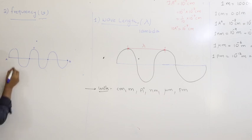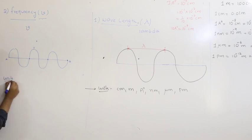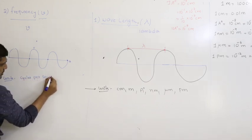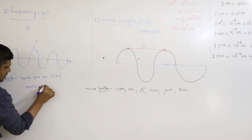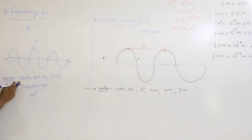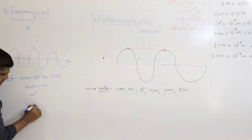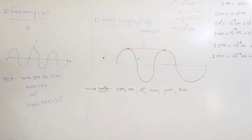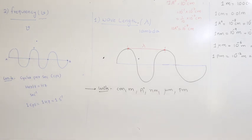The units of frequency are cycles per second (CPS), or Hertz (Hz), or simply second inverse (s⁻¹). One CPS equals one Hertz equals one second inverse. That means a wave can complete one wave cycle per second, or the number of waves passing through a point in one second is one.